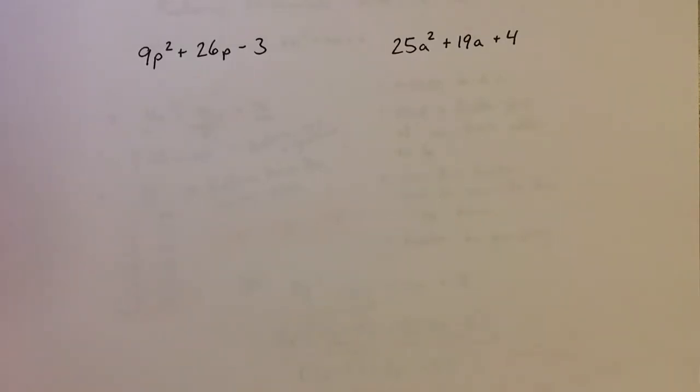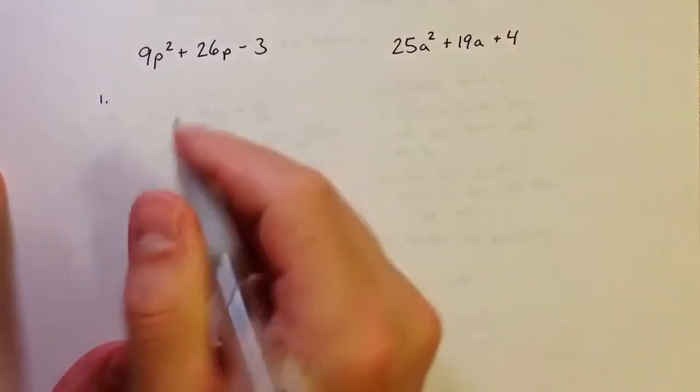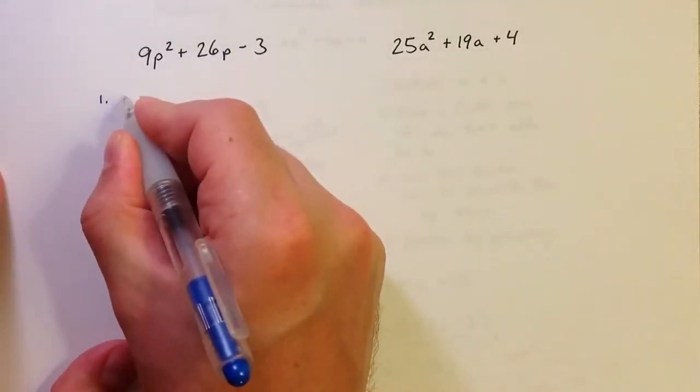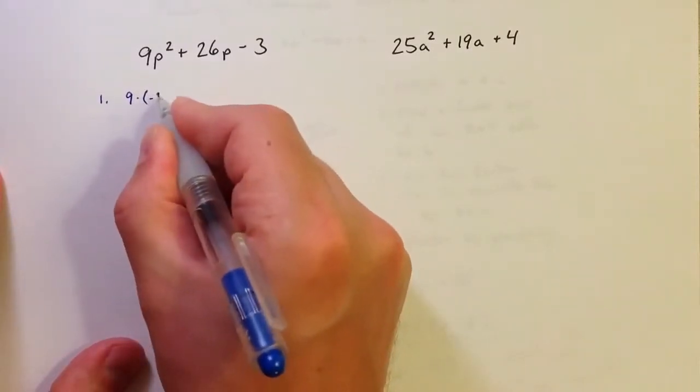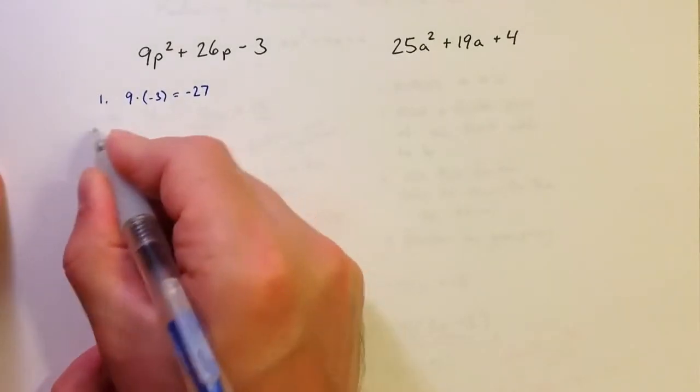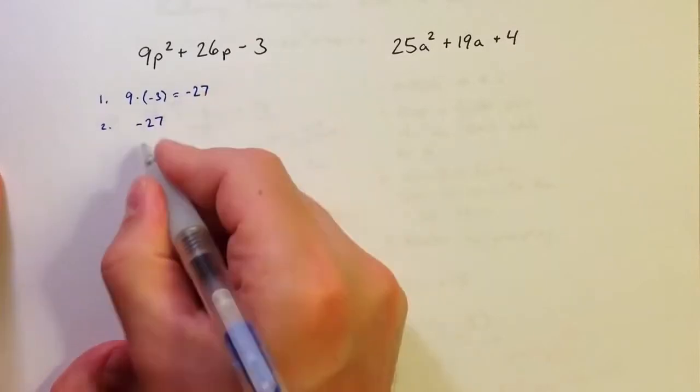All right, I hope you paused the video and took a moment to try to factor these using the AC method. So let's see what the answer should be. So if I walk through the problem here, A times C is 9 times negative 3 this time, so I get a negative 27.